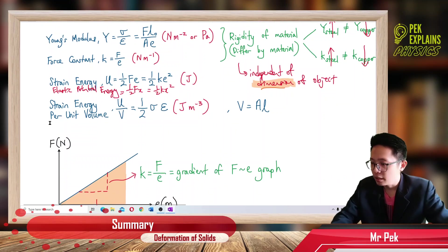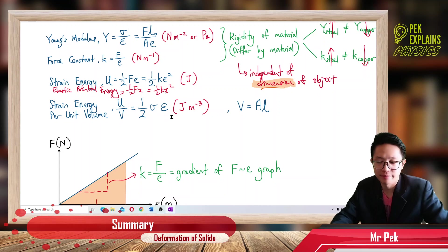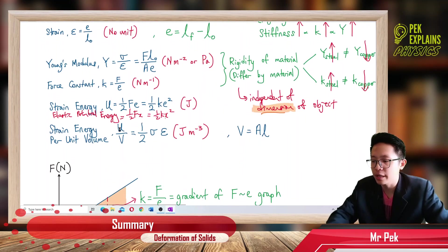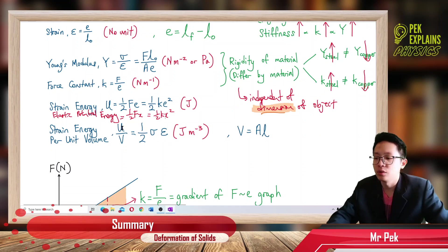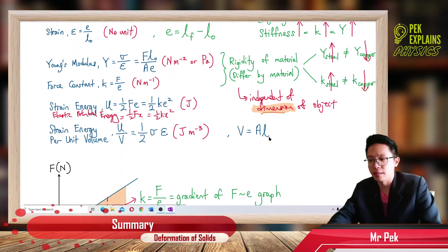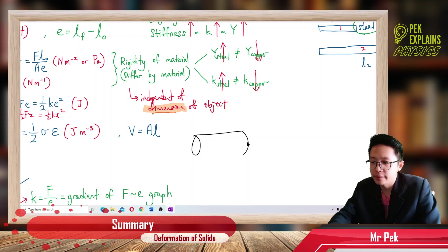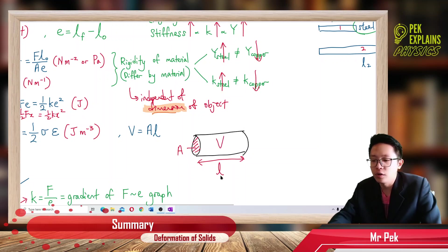Strain energy per unit volume is the strain energy divided by the volume, which equals half stress times strain. The unit for strain energy is Joule, and volume is meter cubed, so strain energy per unit volume is Joule per meter cubed. Volume is area times length — it's like a wire or cylinder where you multiply the cross-sectional area by the length to get the volume.